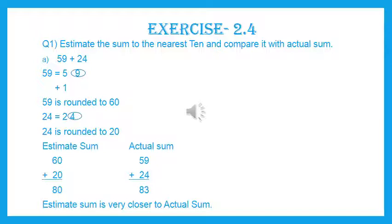For round off to the nearest 1000, we need to check the 100's place. If the 100's place is less than 5, we will not make any changes — we just make the 10's place, 1's place, and 100's place all become 0. But if the digit at 100's place is greater than 5, we make those places 0 and add 1 to the 1000's place. This is round off to the nearest 1000.